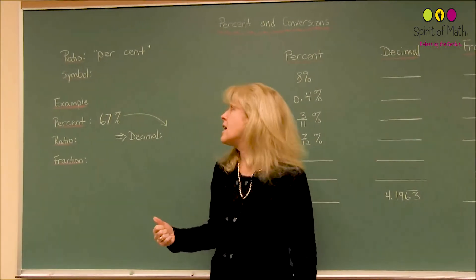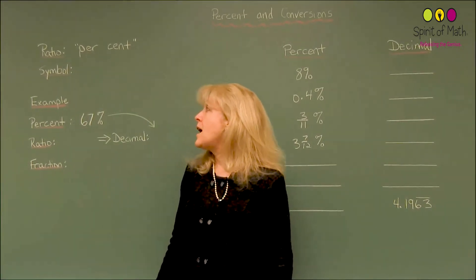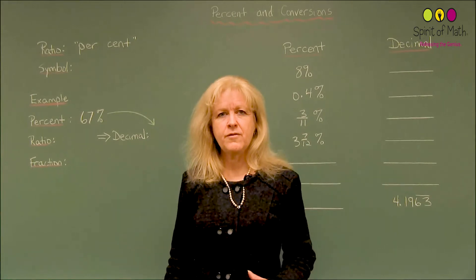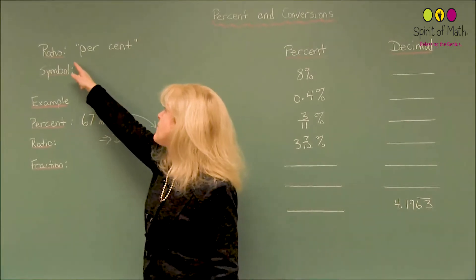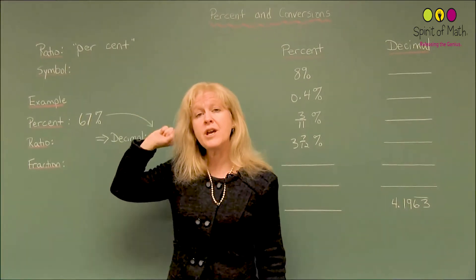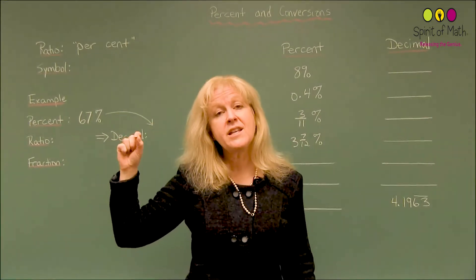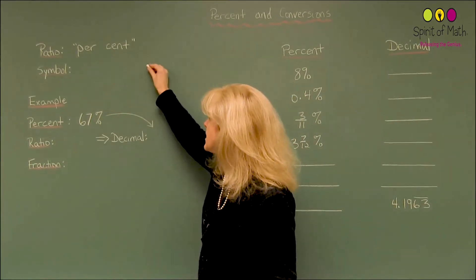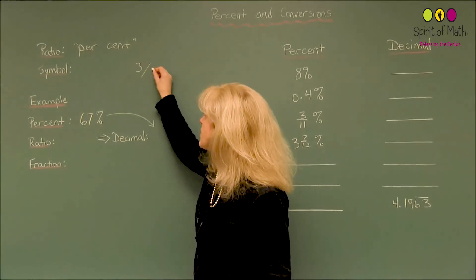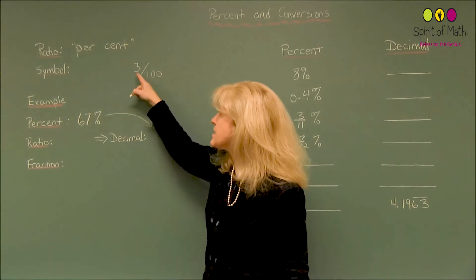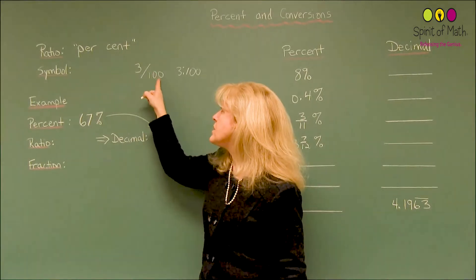So let's look first of all at what this ratio percent is. As you heard before, I put it out into French — our word percent — and so we have a ratio of percent, also known as a percent. And cent is 100. So it really is saying 'per', which is like a fraction. If you have three per 100, just like your ratio, three per 100 — you have a per cent, which is a per 100.